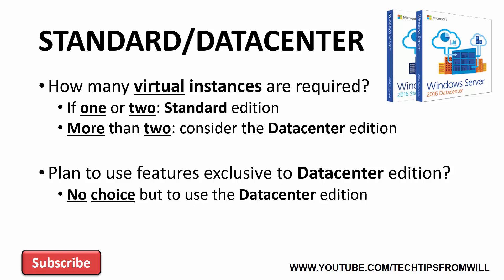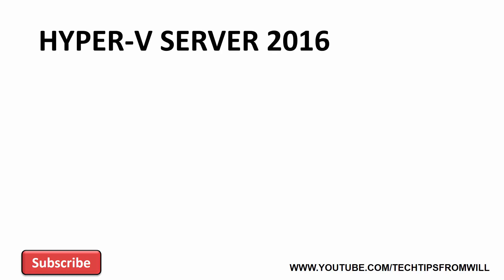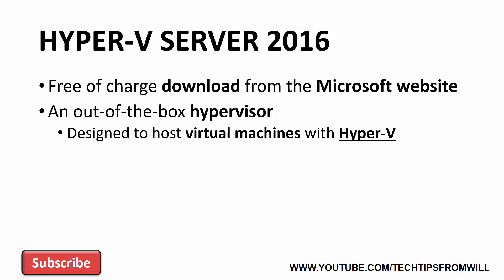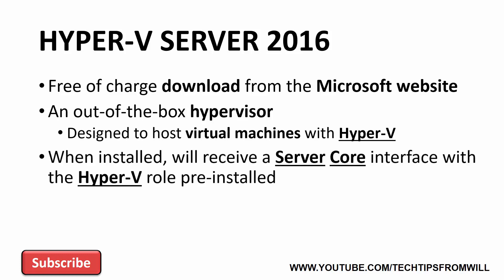That covers the three main editions of Windows Server 2016. In the real world, these are the editions you're most likely to come into contact with, but there are a couple of specialised editions too. The first of these is Microsoft Hyper-V Server 2016, which is available free of charge as a download from the Microsoft website. As the name suggests, Hyper-V Server 2016 is a lightweight, out-of-the-box hypervisor designed to do nothing other than host virtual machines with Hyper-V. When you install Hyper-V Server 2016, you essentially get a server core interface with the Hyper-V role pre-installed.